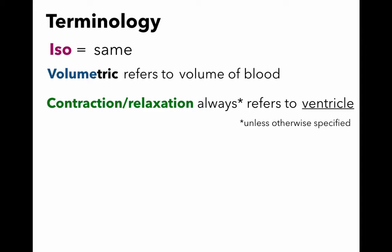When we discuss contraction or relaxation, it always refers to the ventricle when we're talking about the cardiac cycle, unless it says atrial contraction — then it's obviously referring to the atria. Remember that contraction is also referred to as systole, depending on your accent. Note that I say systole with a Canadian accent, but some of you from the U.S. may say systole. And relaxation is diastole, or you might refer to it as diastole.